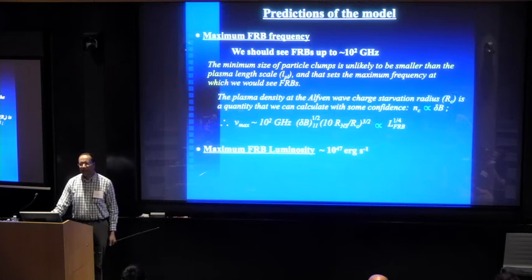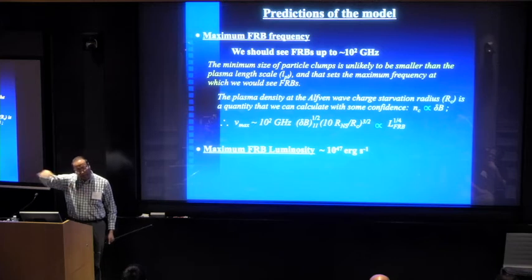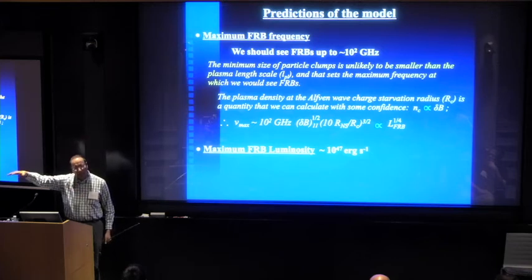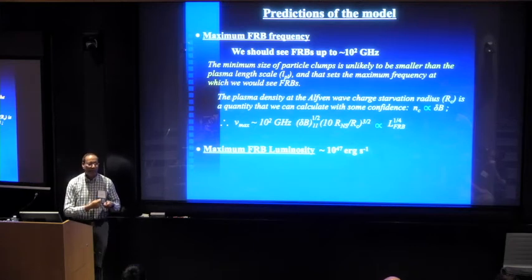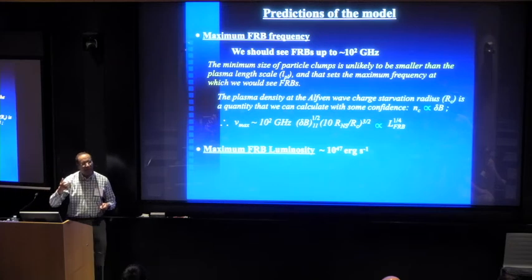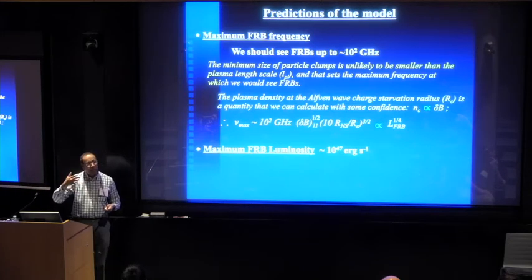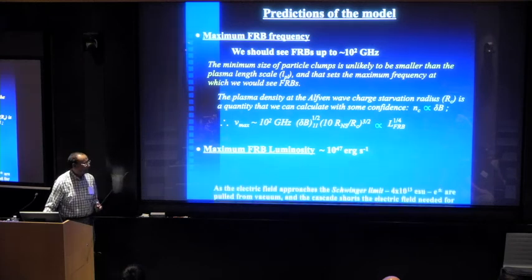Wenbin has already mentioned the other consequence or prediction of this model is the maximum FRB luminosity, which is set by simply the Schwinger limit, the breakdown of vacuum in the electric field. This is not the electric field of the FRB radiation. This is the electric field that is accelerating these clumps of particles. When that approaches to within about 10% of the Schwinger limit, then there is a breakdown of vacuum. Electron positrons are created. They short out this electric field. No acceleration of clumps, no FRB radiation.